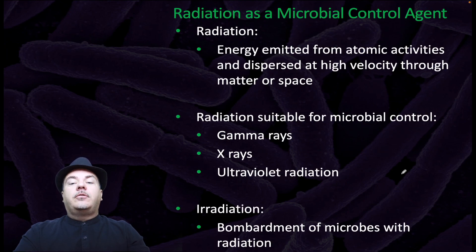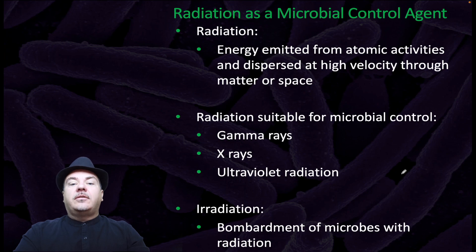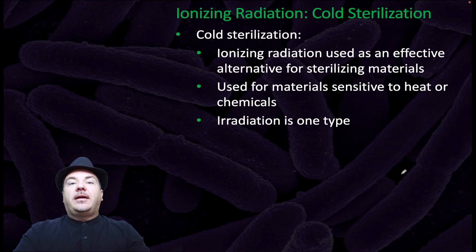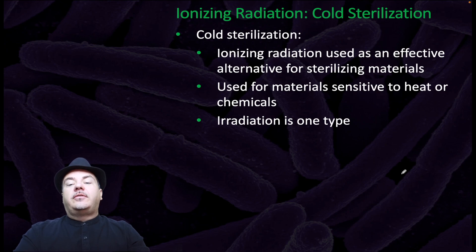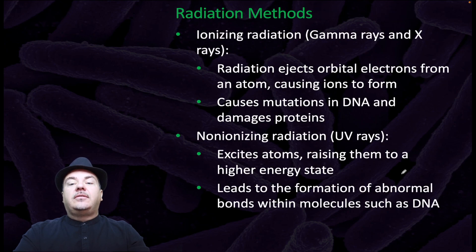We can also use radiation as a microbial control agent. Radiation is energy emitted from atomic activities and disperses at high velocity through matter or space. Radiation suitable for microbial control includes gamma rays, x-rays, and ultraviolet radiation. Irradiation is bombardment of microbes with radiation. Ionizing radiation, known as cold sterilization, is used as an effective alternative for sterilizing materials sensitive to heat or chemicals. Ionizing radiation — gamma rays and x-rays — ejects orbital electrons from an atom causing ions to form. It causes mutations in DNA and damages proteins.